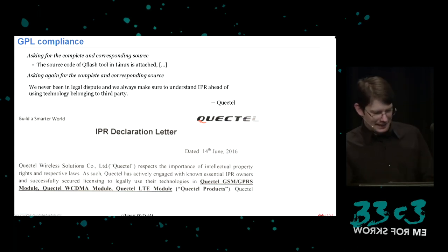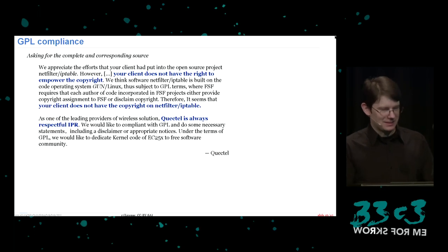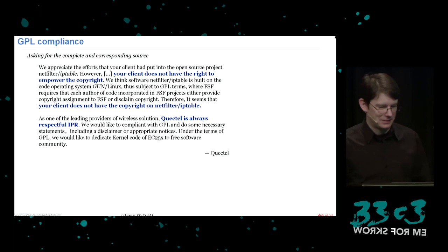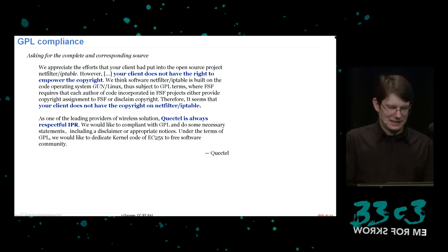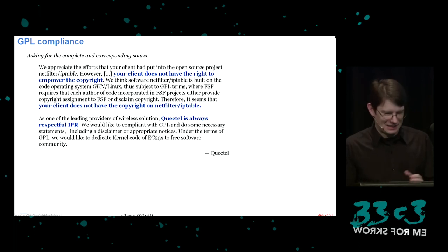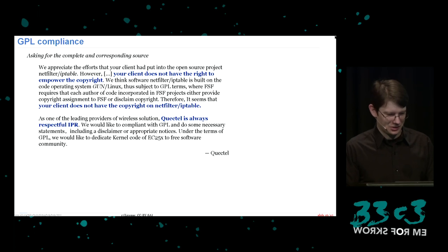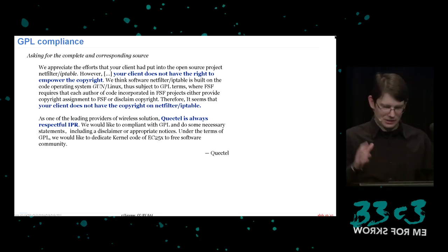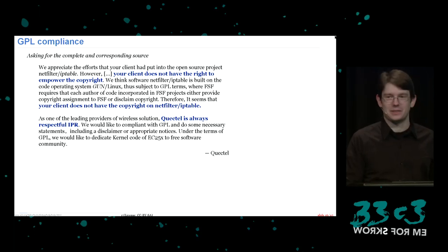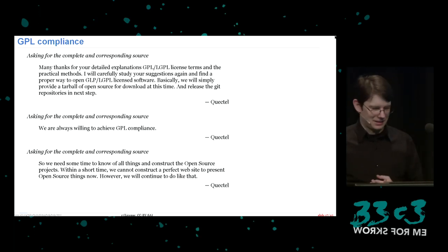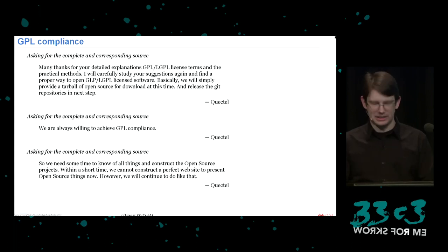Their letter stated they 'actively engage with known essential intellectual property right owners' — apparently the copyright owners of Linux and other free software are not essential. They also wrote to a lawyer from the netfilter/iptables project, misspelling 'iptables' as singular. They claimed I had transferred my copyright to the Free Software Foundation, which I never did. They said 'Quectel always respects intellectual property rights of course.' Still no source code. We asked again and again.